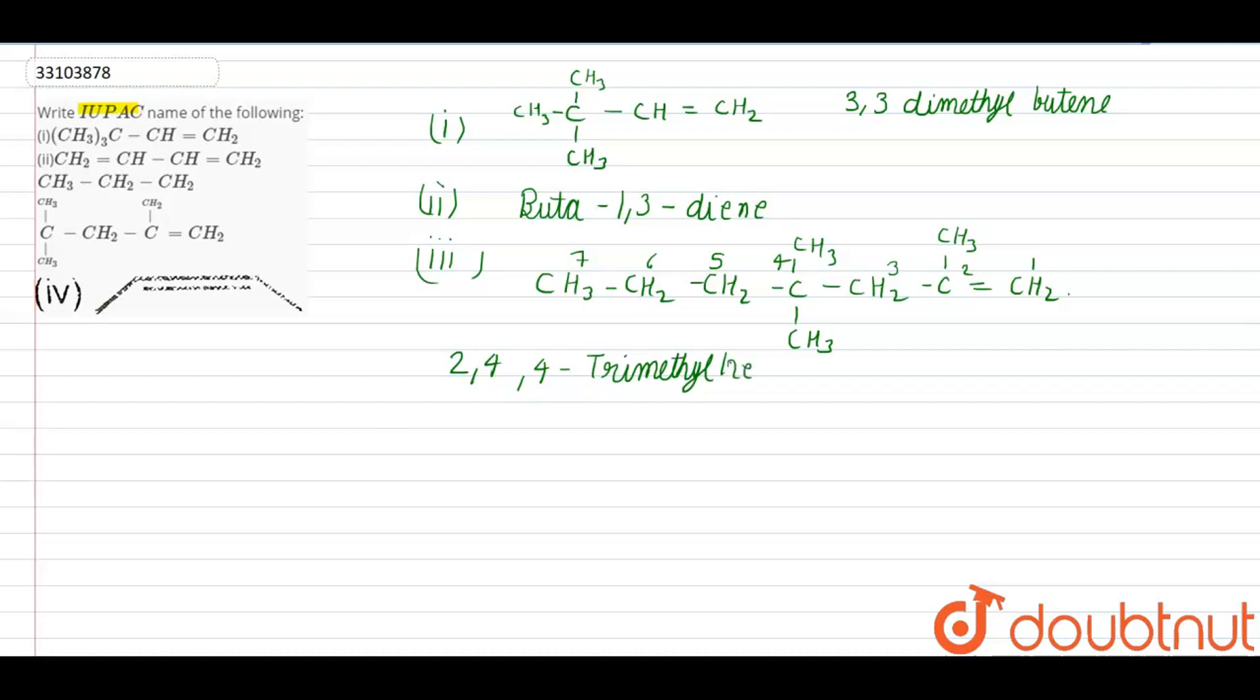So, it's a simple, and the last, fourth one is, it's a simple, but-2-ene. Okay? These are the IUPAC name of 4 compounds.